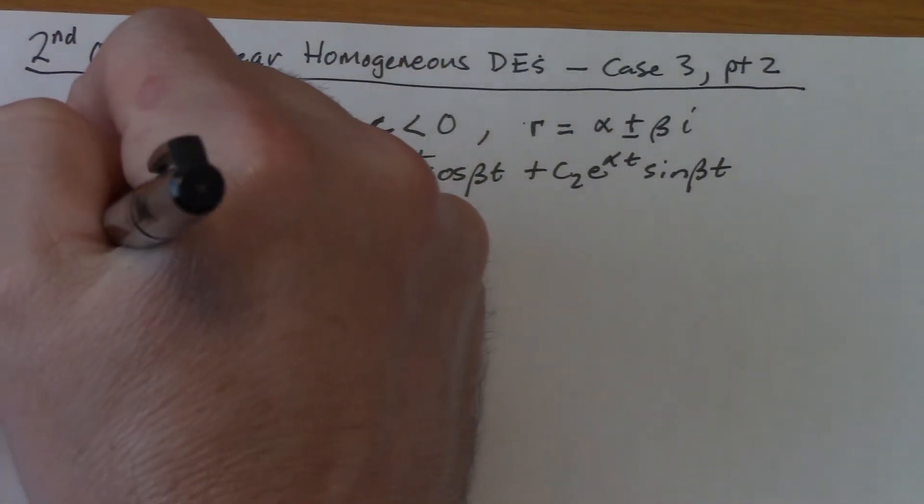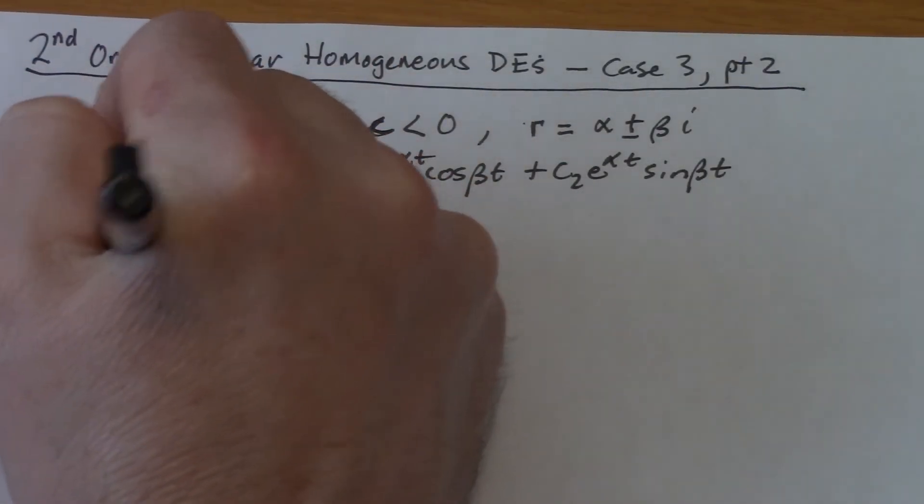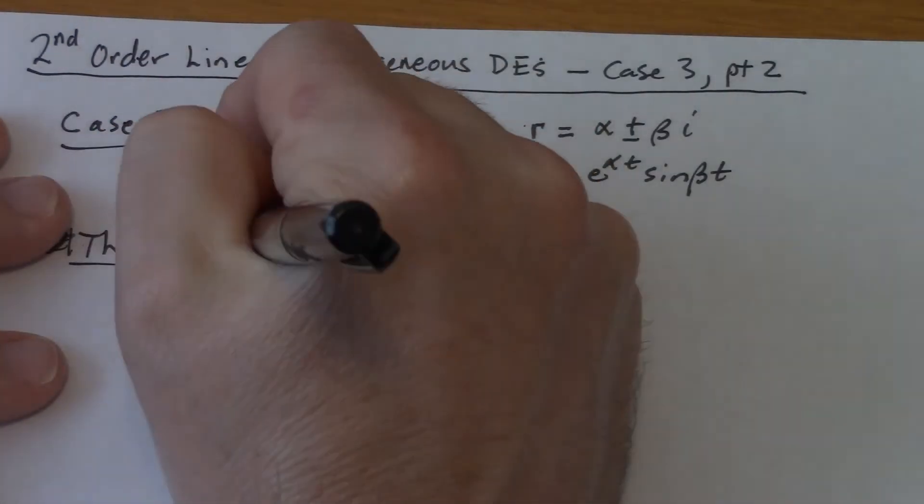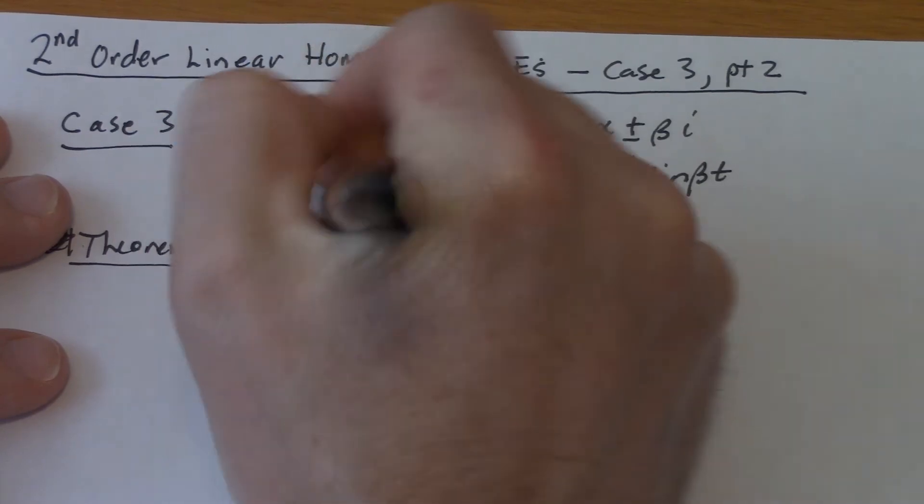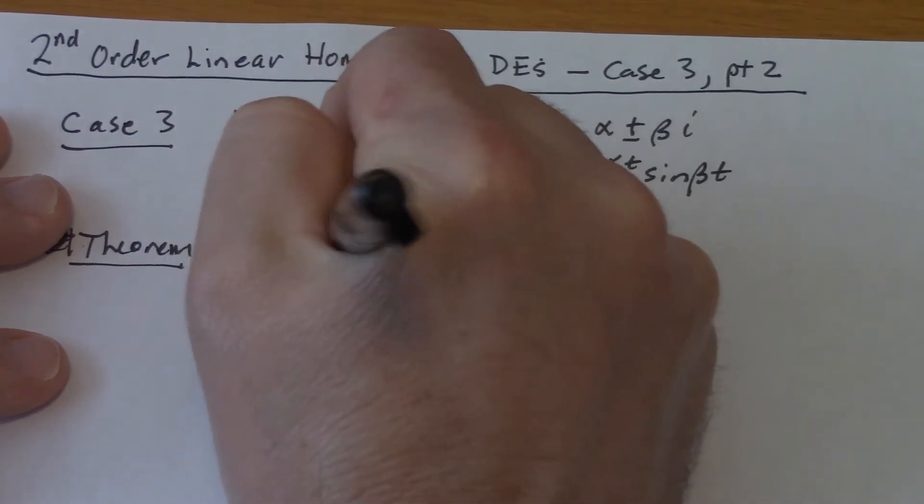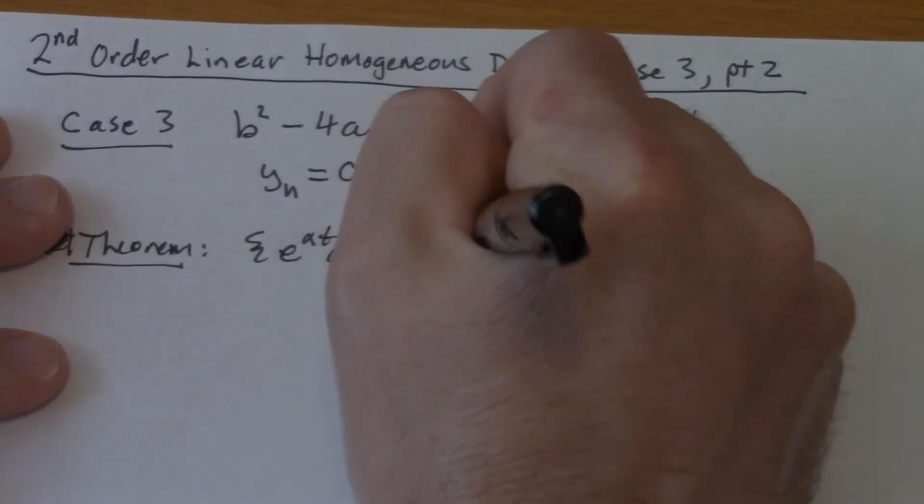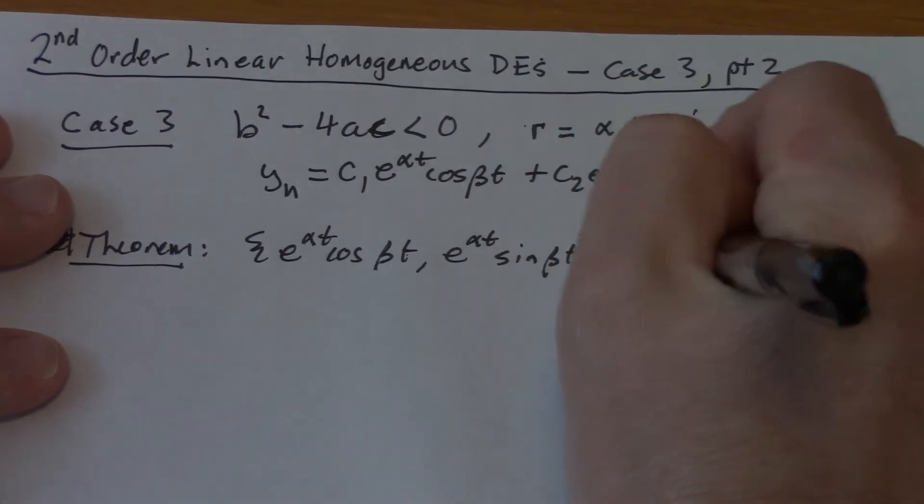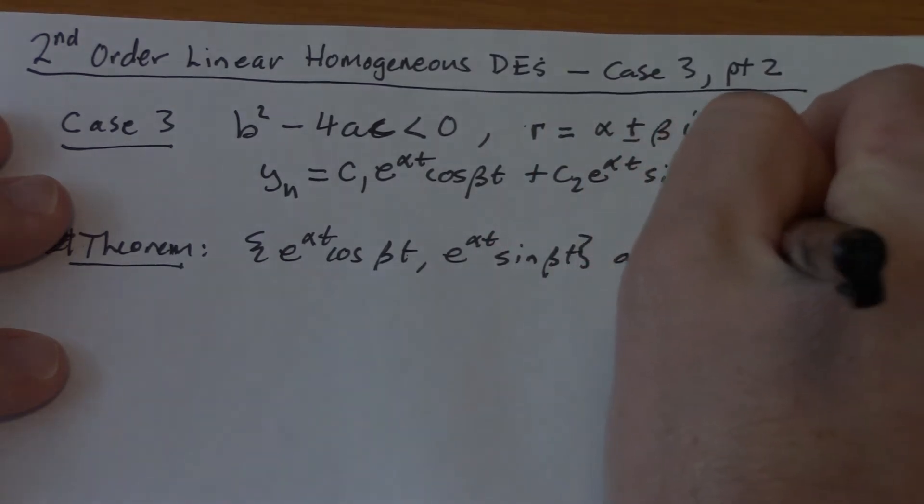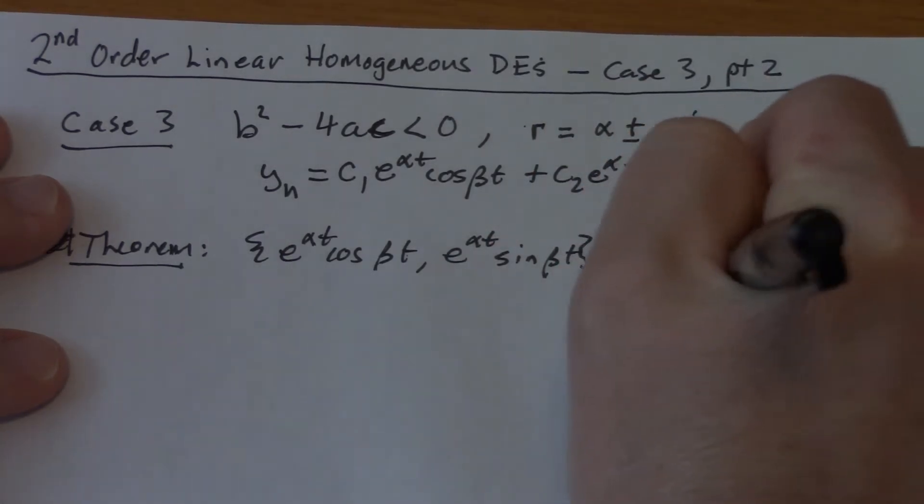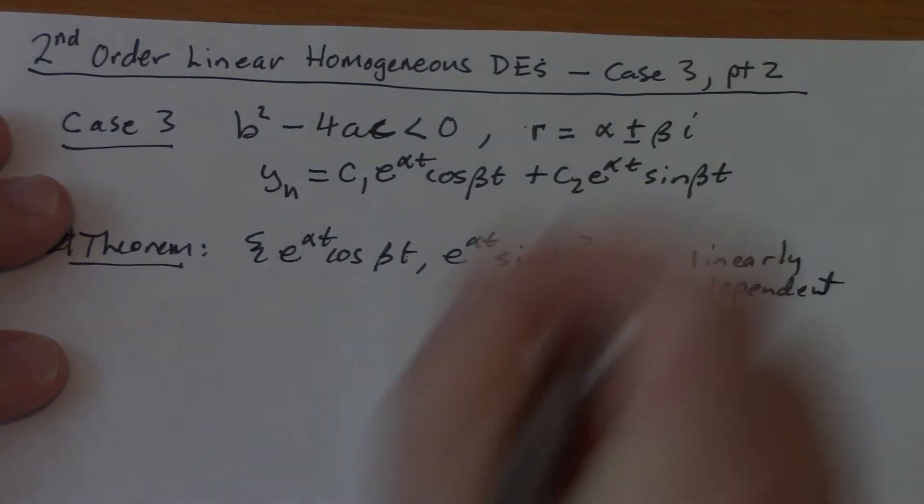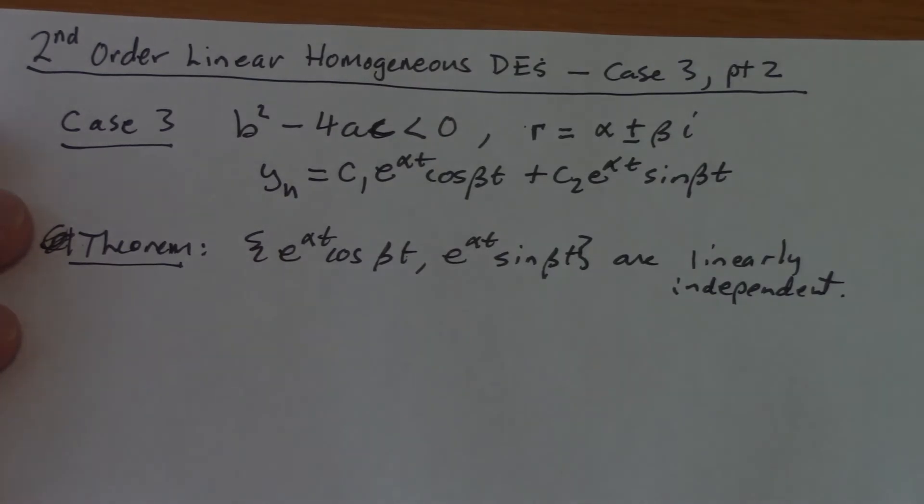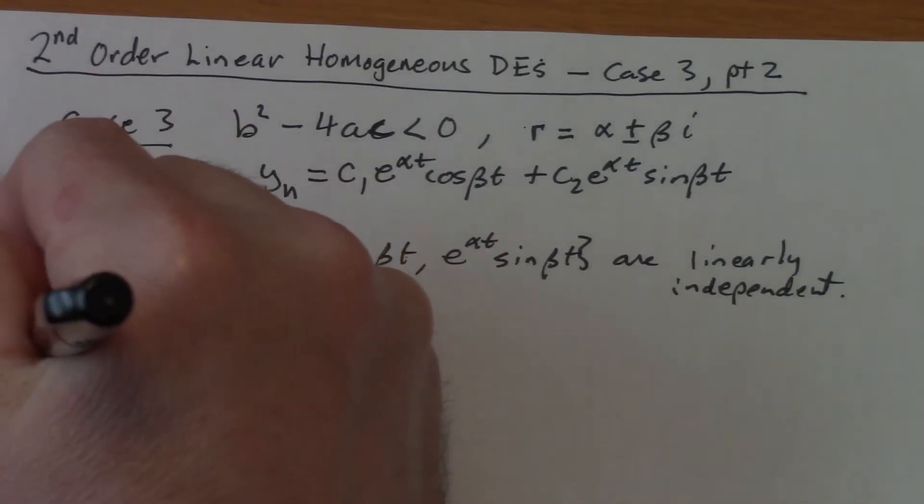Now, my claim now, or I guess I should say a theorem. The last thing I need to show before we believe all this is that the set of e to the alpha t cosine beta t and e to the alpha t sine beta t are linearly independent. Our proof is going to be based on the Wronskian, yet once again.